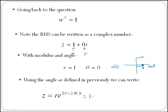Therefore, since r is 1, we have 1 by e to the power of theta, which is 0, plus 2 phi k i, which is simply e to the power of 2 phi k i.